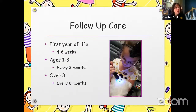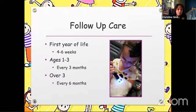For follow-up care: the first year of life I usually see them monthly, then every three months, and once they're over three years old, about every six months. At this point I usually have very solid relationships established with the parents and I trust them to call me if they feel like something is not right.